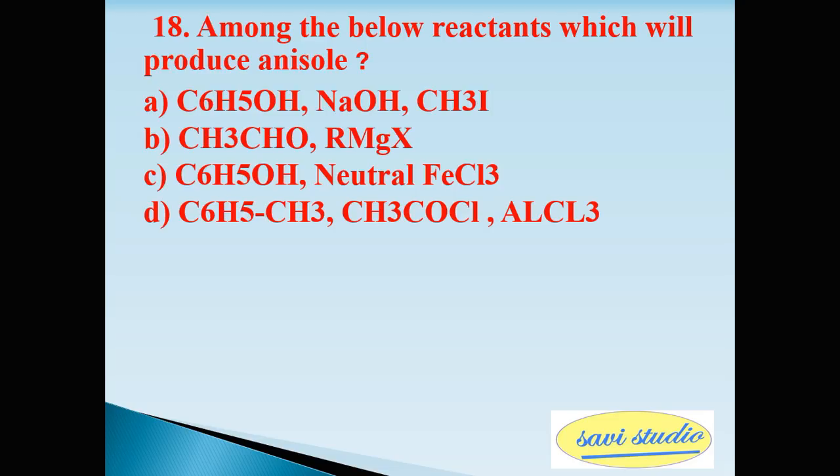Eighteenth question: among the below reactants, which will produce anisole? Option A: C6H5OH, NaOH, CH3I. Option B: CH3CHO, RMgX. Option C: C6H5OH, neutral FeCl3. Option D: C6H5CH3, CH3COCl, AlCl3. The right answer is A: C6H5OH, NaOH, CH3I.